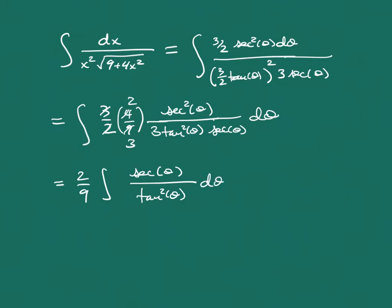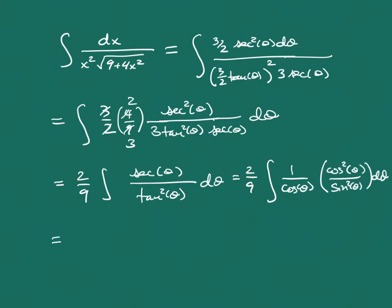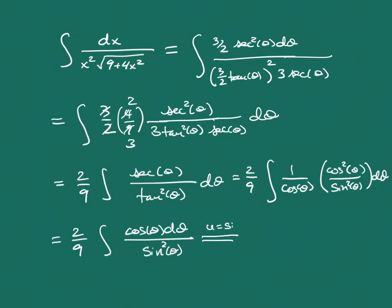Converting to sines and cosines, secant is 1/cosine and 1/tangent squared is cosine squared over sine squared. Canceling the cosines, we get a 2/9 integral of cosine of theta over sine squared of theta d theta. Doing a u-substitution with u equal to sine of theta, du becomes cosine of theta d theta, and we get 2/9 times the integral of 1 over u squared du.